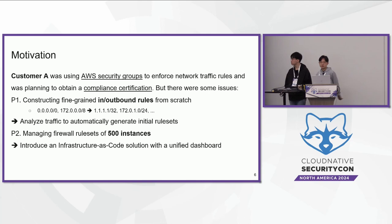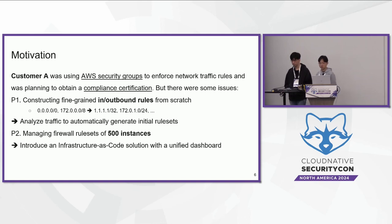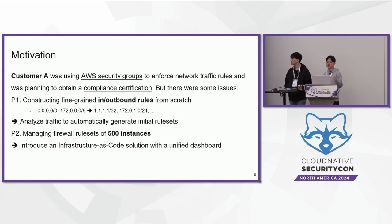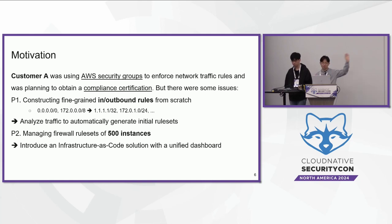The first challenge was addressed by analyzing traffic to automatically generate initial rulesets. The second was tackled by introducing an infrastructure-as-code solution with a unified dashboard for easier management — in this case, the unified dashboard is a spreadsheet. If a company uses only Kubernetes infrastructure, it's relatively easy to manage their network policies because there are good solutions such as Calico, Istio, or Solo.io.